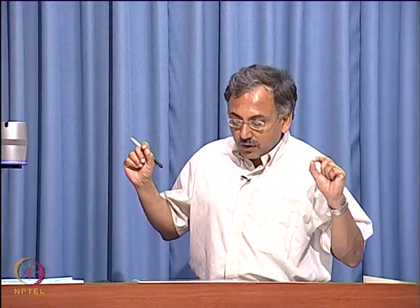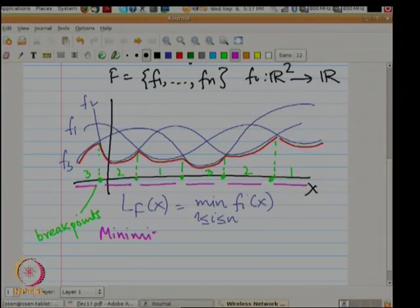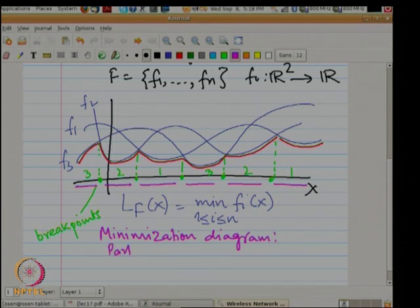Since I have drawn univariate functions, what this lower envelope does is it partitions the real axis — the x-axis — into intervals, so that the same function appears on the envelope within each interval. This partition of the real axis into these intervals is called the minimization diagram.